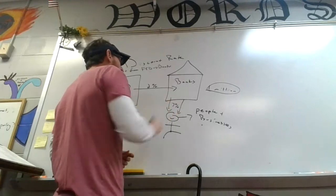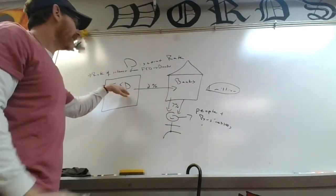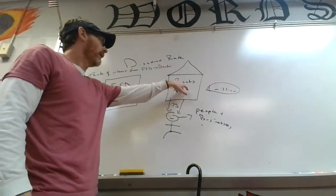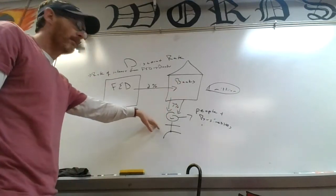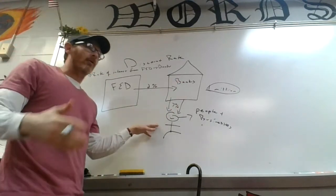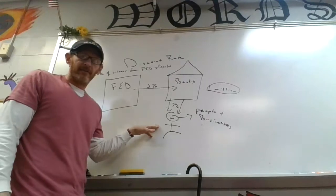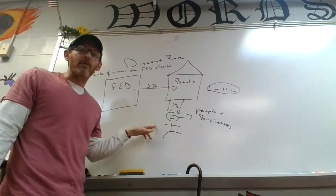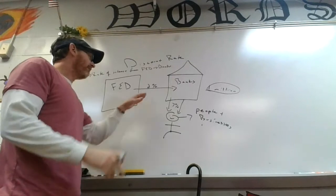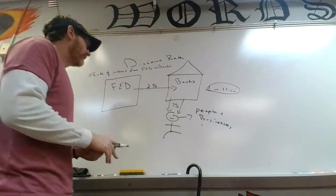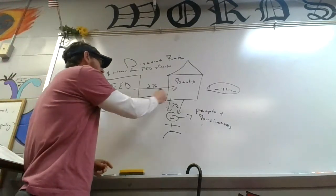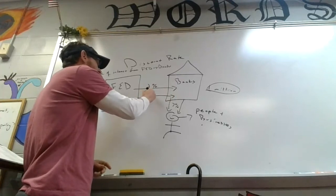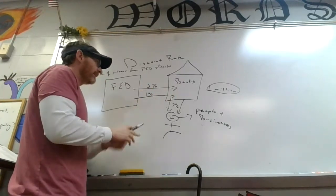Okay, so the Fed loans the banks money and the banks loan the people money. Now the banks don't always need to borrow money from the Fed, but they can if they want. And so if the Fed decides to lower the interest rate, let's say they lower it to 1%.